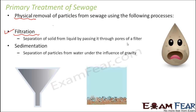The next process is sedimentation, where particles are separated from water under the influence of gravity. If you have a solution with liquid and solid particles and leave it undisturbed for some time, the heavier particles tend to settle down at the bottom. The solid particles settle at the bottom and the water remains on the upper side. The longer the water is stored undisturbed, the more settlement occurs at the bottom. Together, filtration and sedimentation help remove solid particles from the sewage.